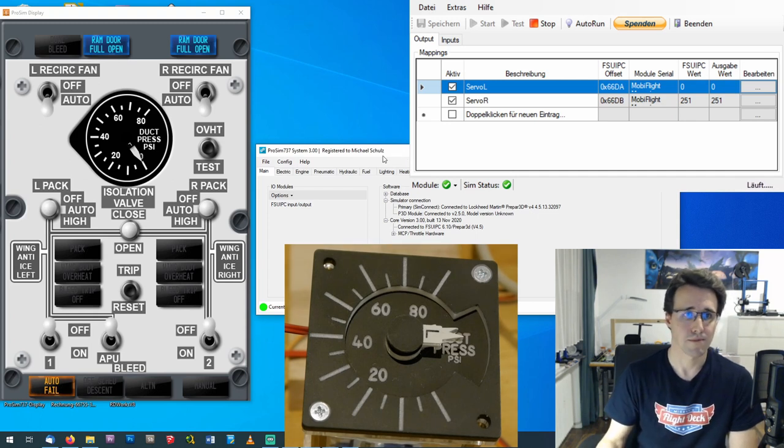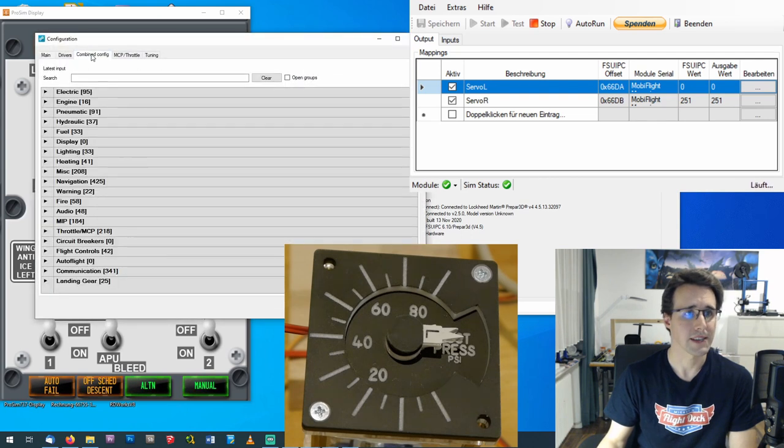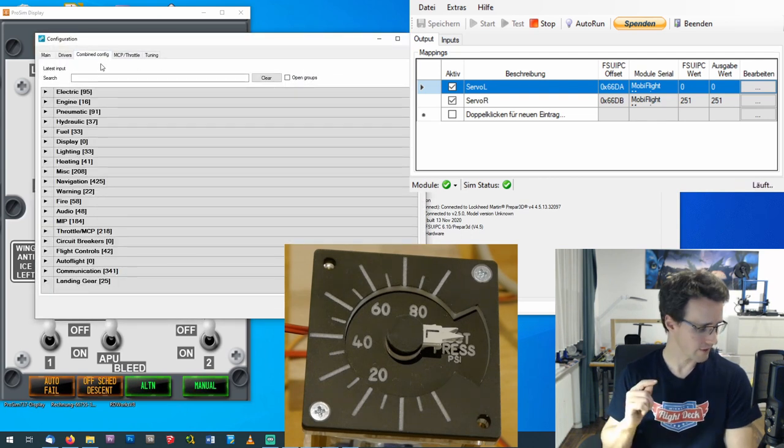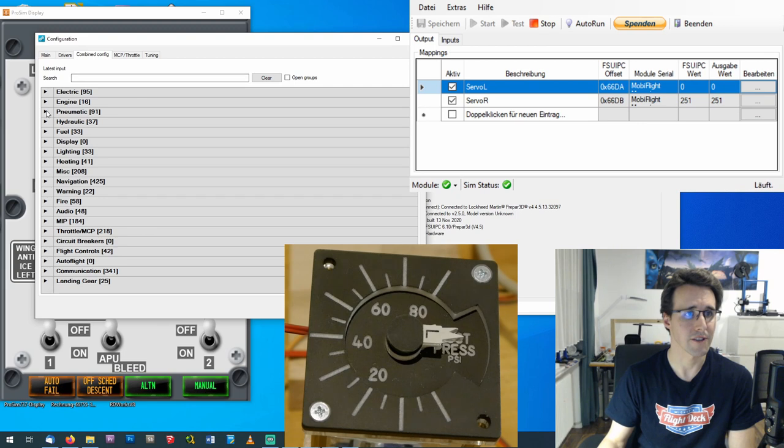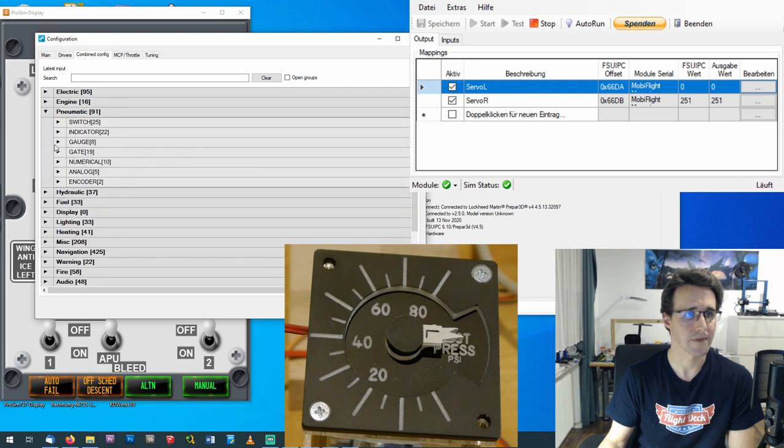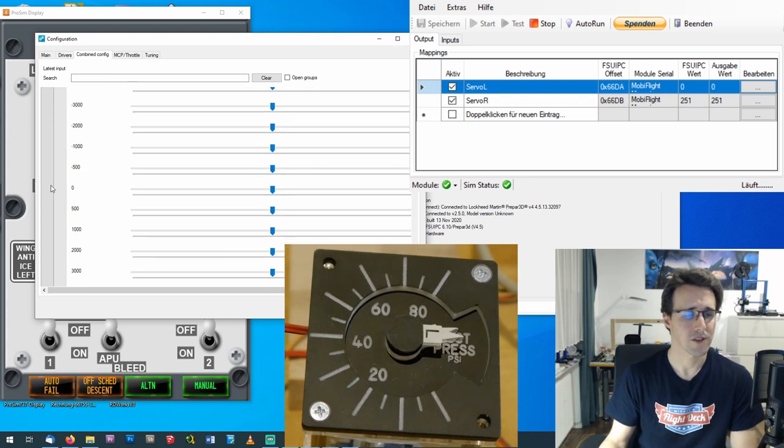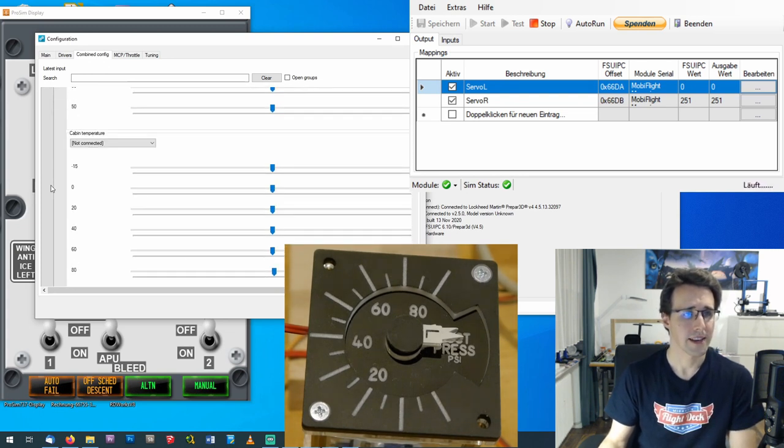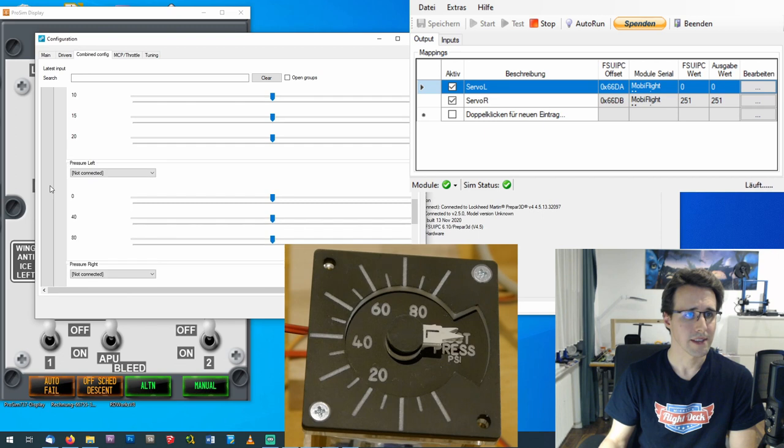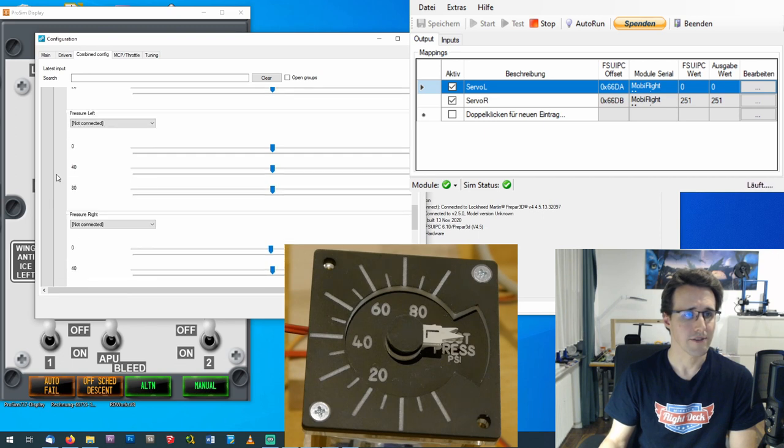But now to program the gauge in ProSim I go to config and configuration and combined config and this gauge we can find under the pneumatic category here at gauges. Several other gauges are here already and what we are looking for is the pressure left and pressure right value.